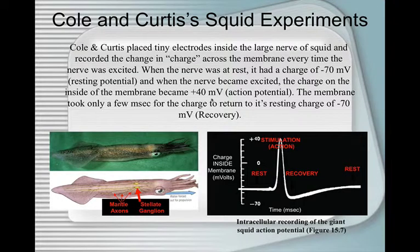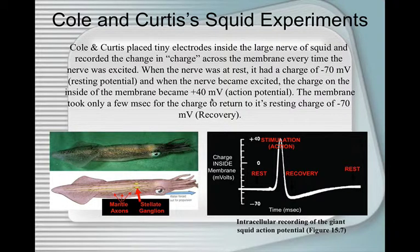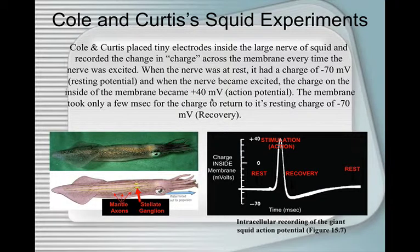Cole and Curtis placed tiny electrodes inside the large nerve of a squid and recorded the change in charge across the membrane every time the nerve was excited. When the nerve was at rest, it had a charge of minus 70 millivolts — the resting potential. When the nerve became excited, the charge on the inside of the membrane became plus 40 millivolts — that's the action potential.